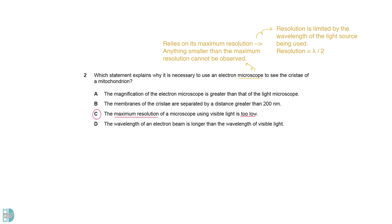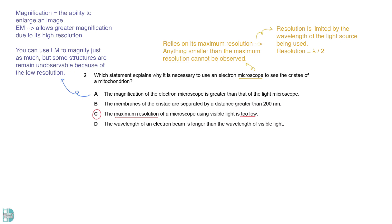A is wrong because magnification is the ability to enlarge an image. The electron microscope has allowed greater magnification due to its high resolution. Technically, you can use a light microscope to magnify just as much, but due to the low resolution, structures that cannot be seen are still not observed. The maximum resolutions of the light microscope and the electron microscope are 200 nanometers and 0.5 nanometers.